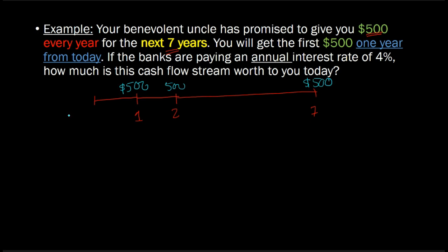Previously, we have tried to answer the question, what is the present value, or how much is this cash flow stream worth to you today? You can implement the formula. The present value is 500 into 1 minus 1 over 1.04...